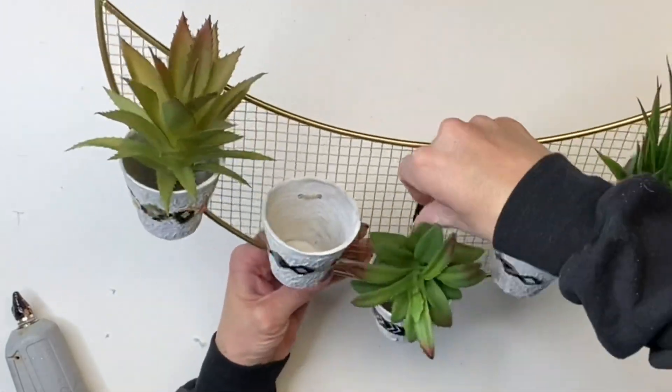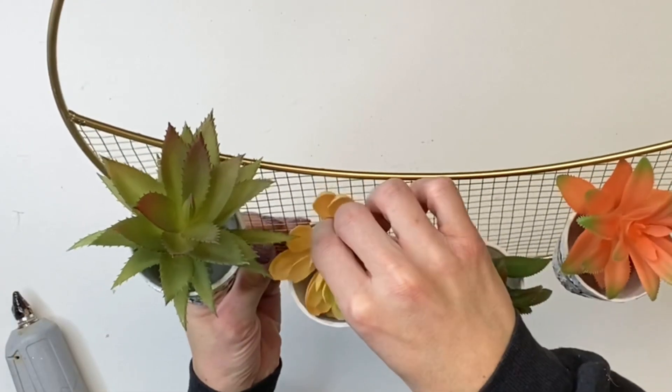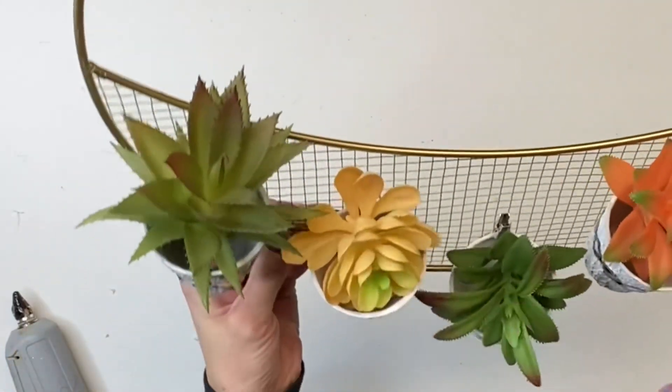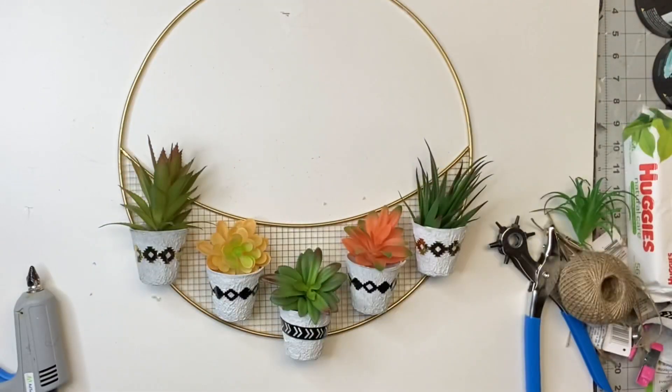And I just took the ones that I had on hand, which most of them are green. And I had a couple of the colored ones, which I just put in between the green ones. And now you could fill these with any type of artificial flower. That works for you.